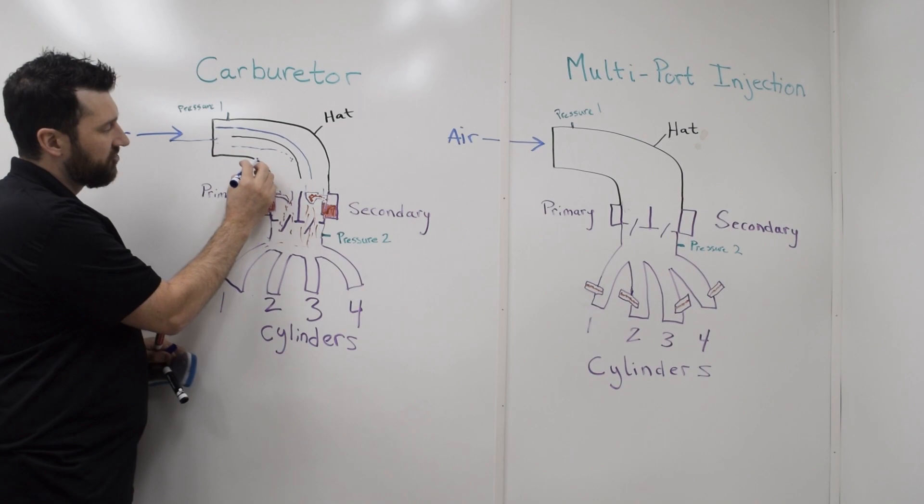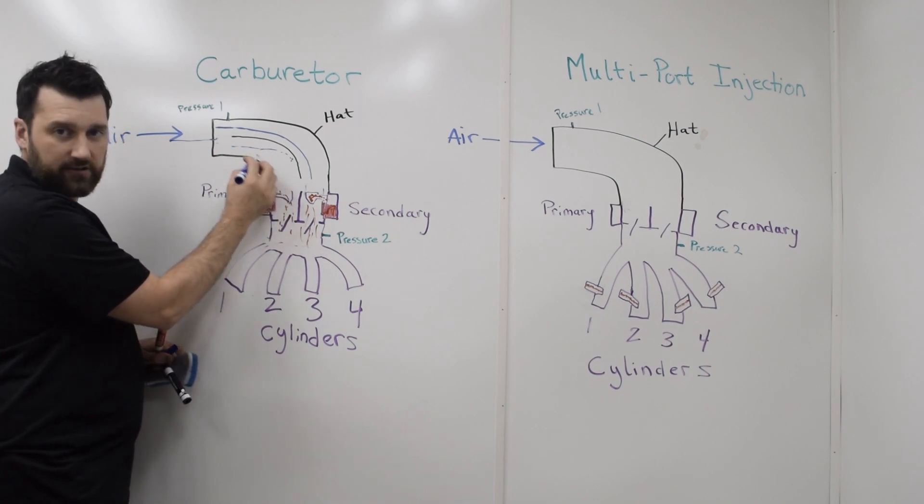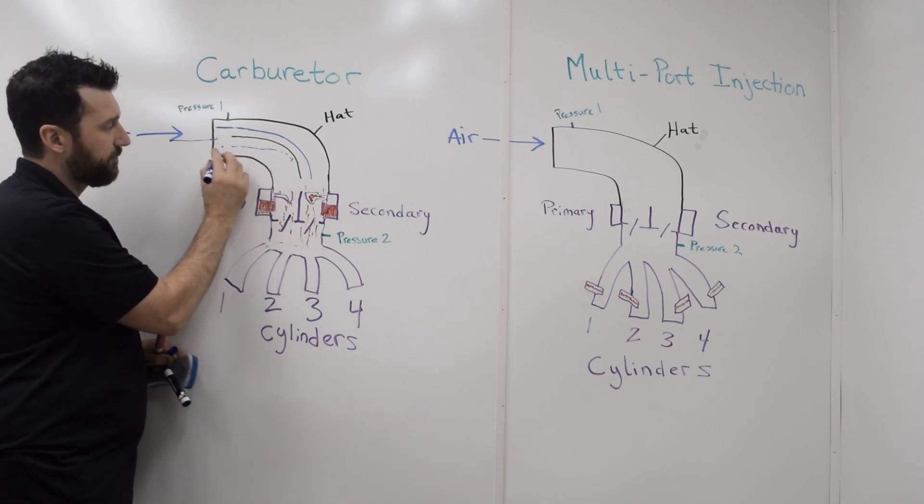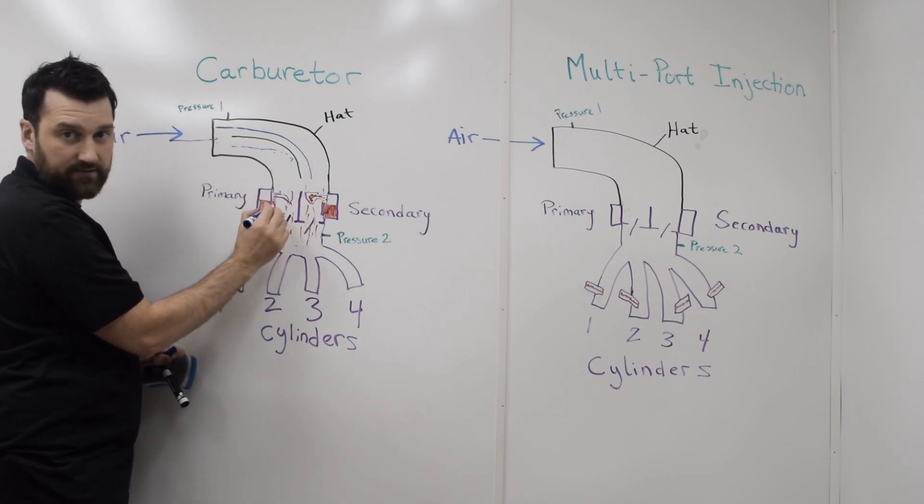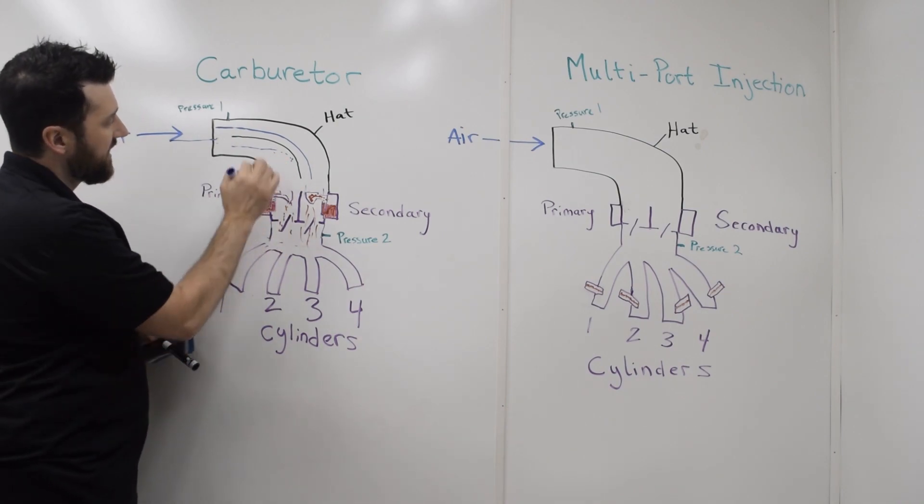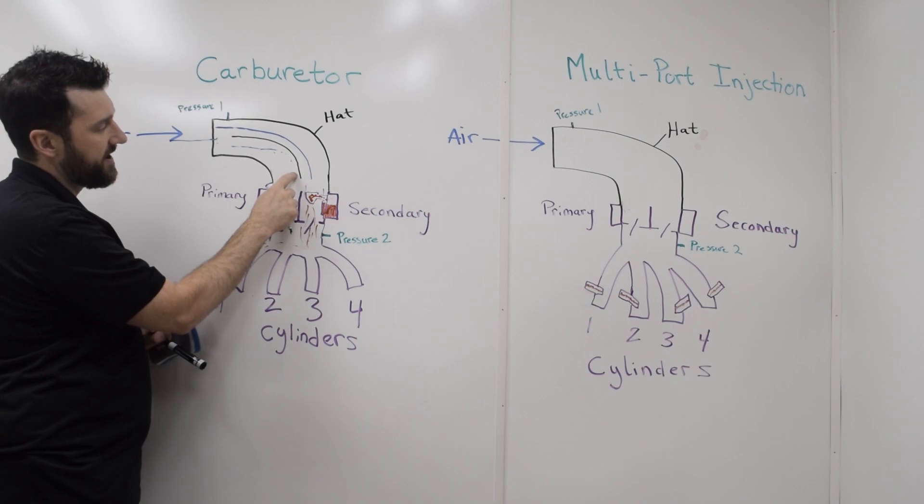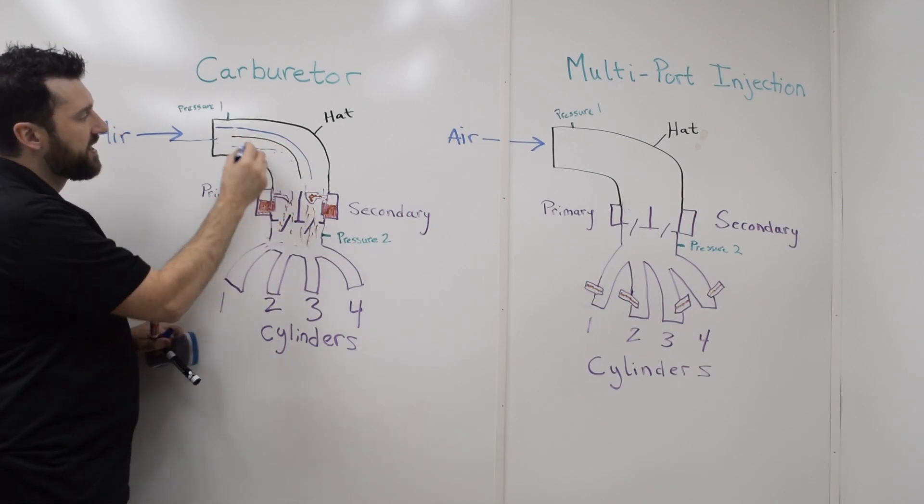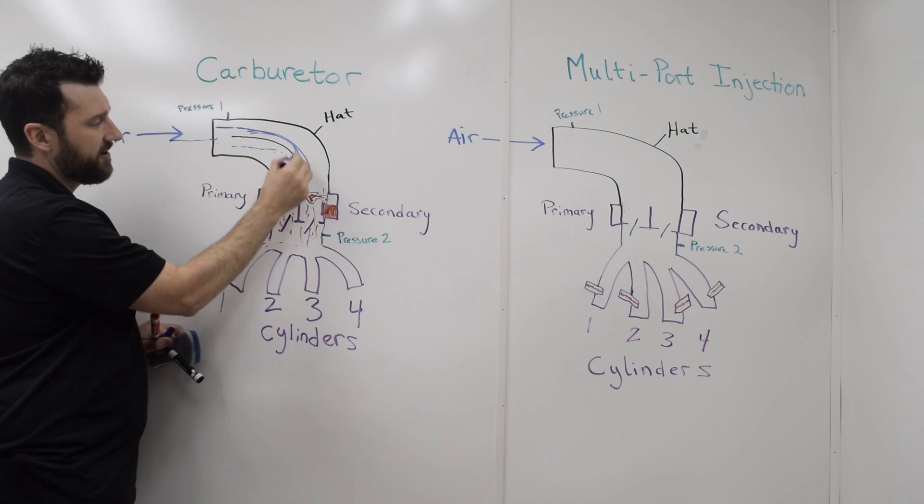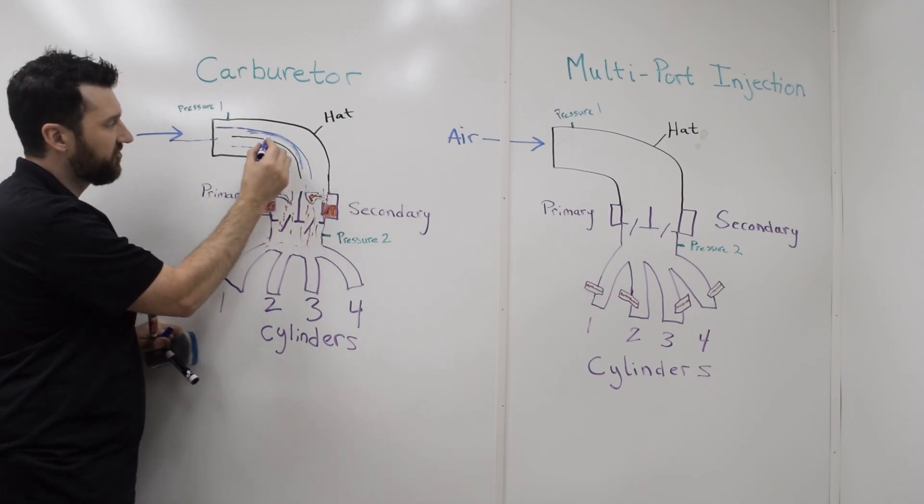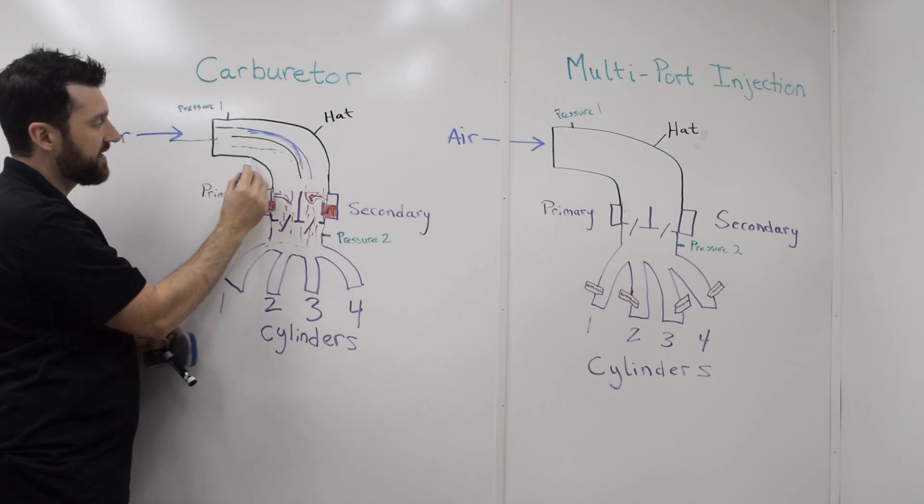This is a much sharper turn for the air to transition from going straight and then making a 90 degree turn. And you can see this short side is a much more gradual turn. So this secondary still tends to flow more air because of the transition of that short side radius.